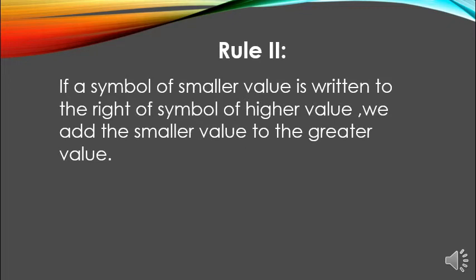What is rule number 2? If a symbol of smaller value is written to the right of a symbol of higher value, we add the smaller value to the greater value. 11 is made with X and I. X equals 10 and I equals 1, so add these two numbers: 10 plus 1 equals 11. So XI represents 11.